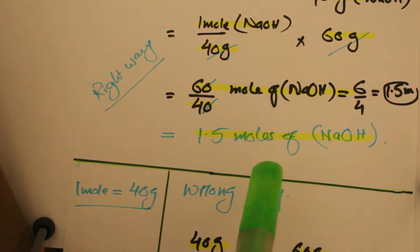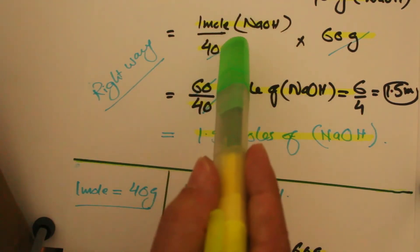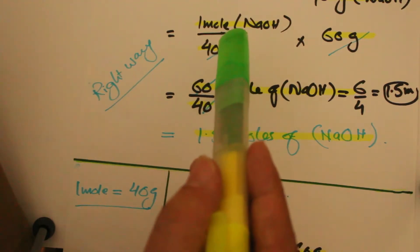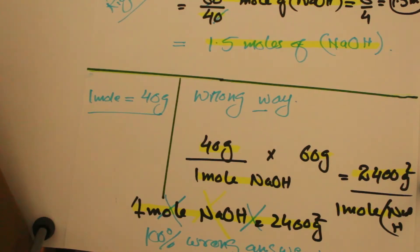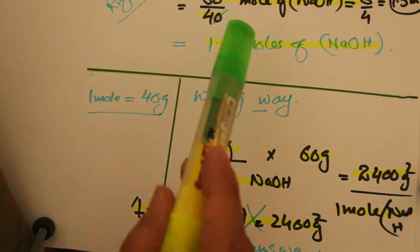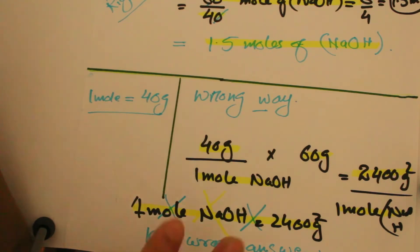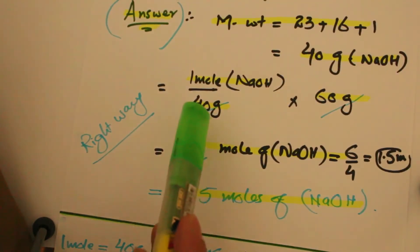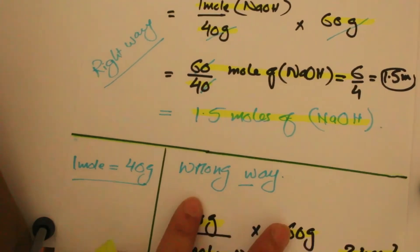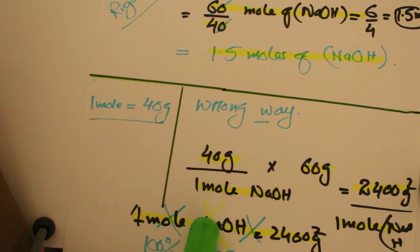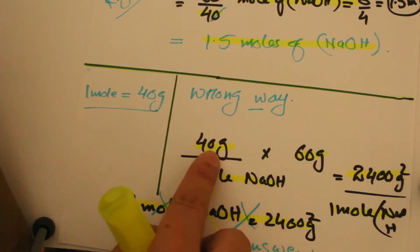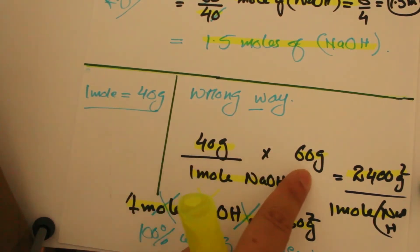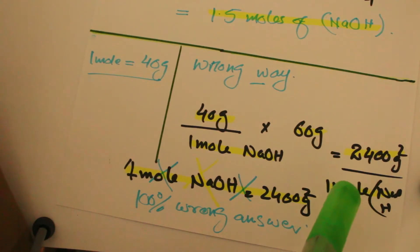If you make some changes to the conversion factor, you will definitely get the wrong answer. Let's solve this question in a wrong way. Here we change the order of the conversion factor — we change the numerator into the denominator. So instead of dividing 1 mole by 40 grams, we divide 40 grams by 1 mole. The result we get is 2400 grams squared.